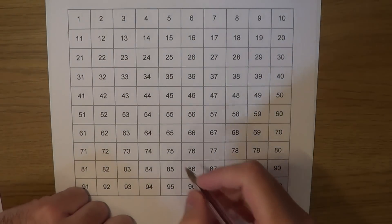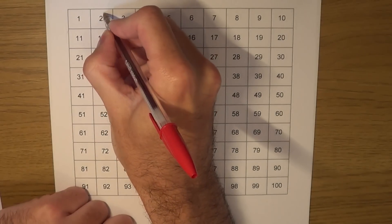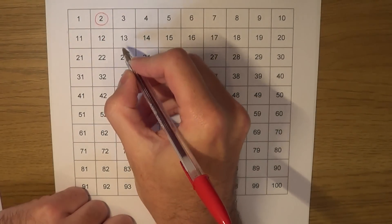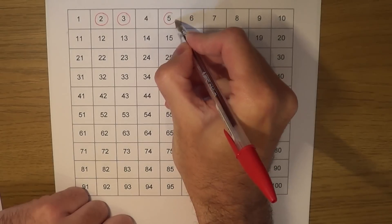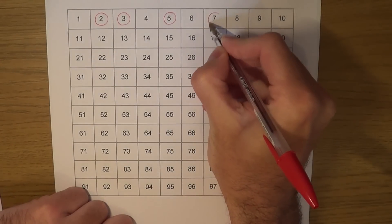So the first prime number, and the only even one, is the number 2. The next prime number is the number 3. The next one is 5, the next one is 7.